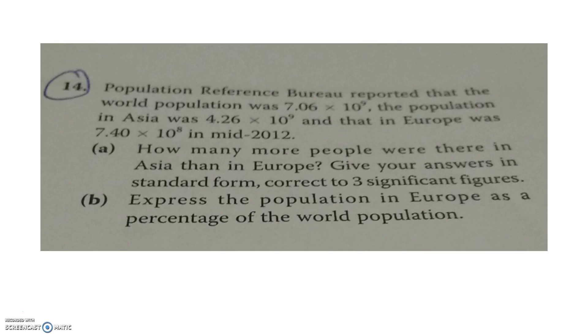This is the problem. The Population Reference Bureau reported that the world population was 7.06 times 10 to the power of 9. The population in Asia was 4.26 times 10 to the power of 9 and that in Europe was 7.40 times 10 to the power of 8 in mid-2012. Question A: How many more people were there in Asia than in Europe? Give your answers in standard form correct to three significant figures. Question B: Express the population in Europe as a percentage of the world population.